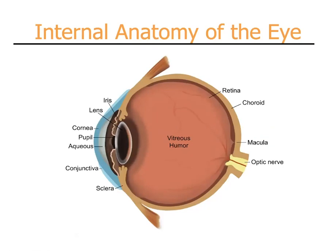Internally, once you pass through the cornea and the pupil, we have the lens of the eye, where cataracts occur. Behind the lens we have the vitreous humor, which is a thick gel-like transparent substance. Along the back wall of the eye we have the retina, which makes the picture, and the choroid, which provides blood supply to the retina. From the retina, the picture travels through the optic nerve to the brain. This entire system is what gives us vision.